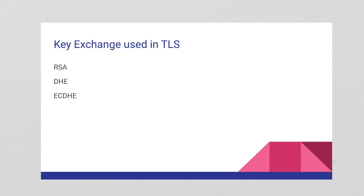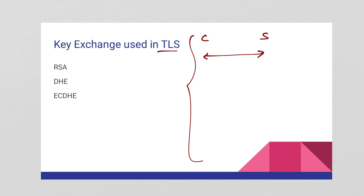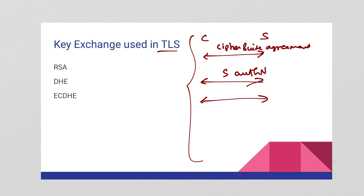In the past episode I mentioned how a typical TLS works. You have a client and a server. At the very beginning you have a TLS handshake. The first part is cipher suite agreement, then server authentication, and the third part is the actual key exchange or key derivation on both sides. Today we are going to talk about the second key exchange method.